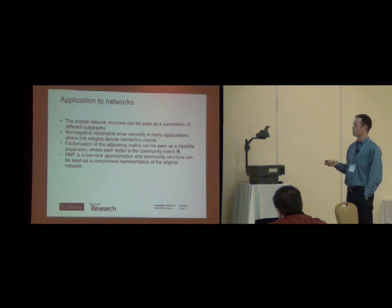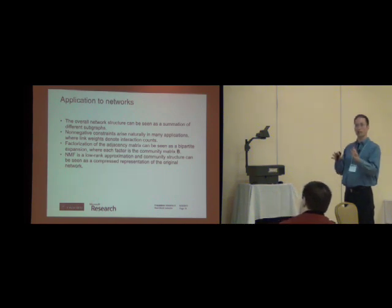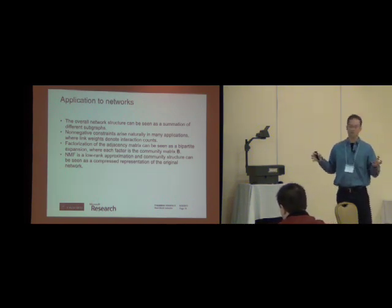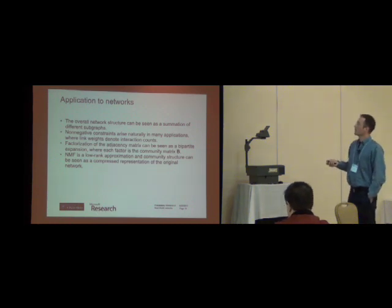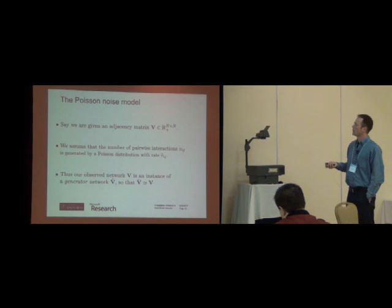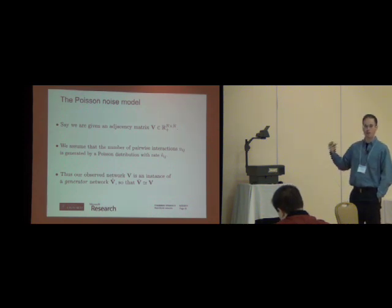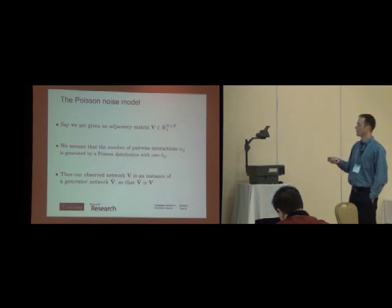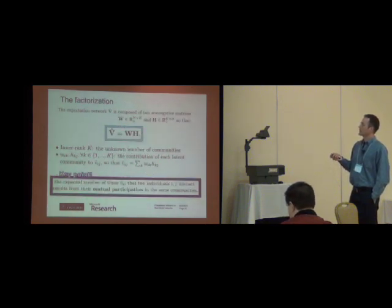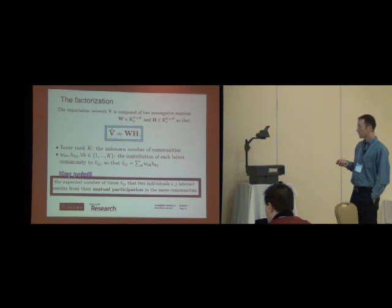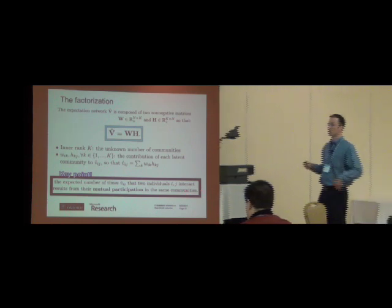But because of this non-negativity constraint in NMF, we have a parts-based representation, as I was saying, so you can see the different bits and pieces here. They do correspond to an intuitive meaning. You can see mouth, you can see the left side here, the right side here, the contour asymmetries of the face, and so on. So in networks, those parts are communities. We achieve a certain compression because going from N by N matrix to just two matrices, each N by K, if you add up the total number of elements, you get a bit smaller number overall.